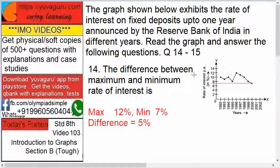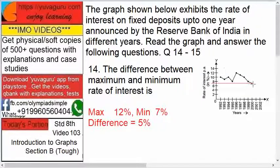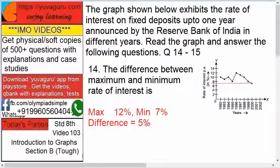The maximum rate of interest is 12 — you can see that point on the graph. The minimum is 7; you have to draw a straight line from that point to cut it at the y-axis, and it falls at the center, which is 7. So the difference is 12 minus 7, which is 5.